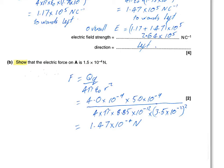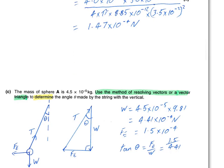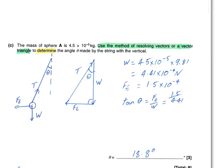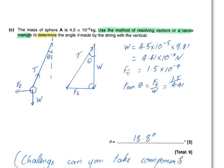And then moving on to part C. We're now given the mass of the sphere, 4.5 times 10 to the minus 5 kilograms. And crucially, it tells us how they want us to do the question here. They want us to do this by resolving vectors, or by using a vector triangle to determine the angle theta made by the string with the vertical.